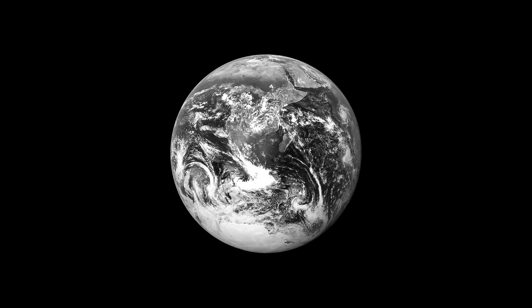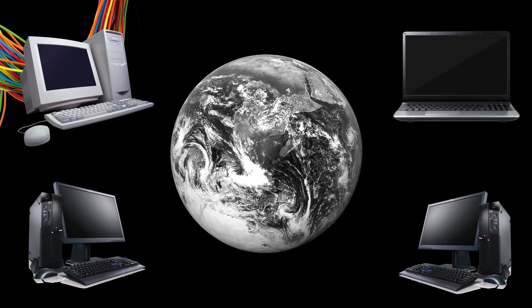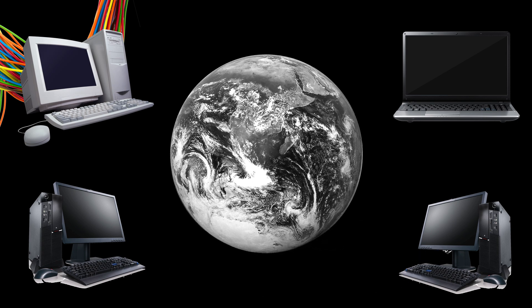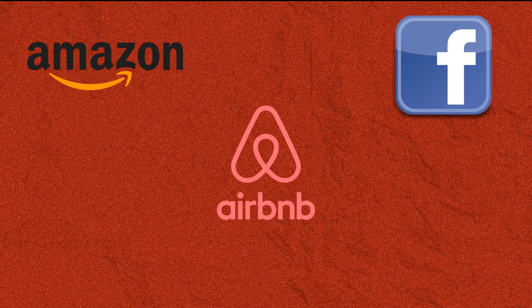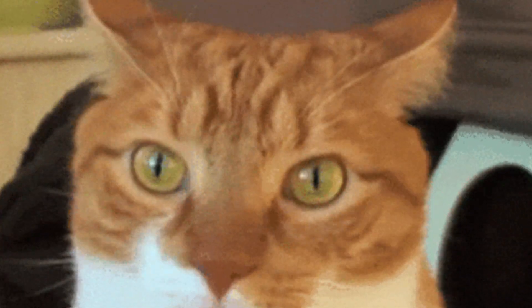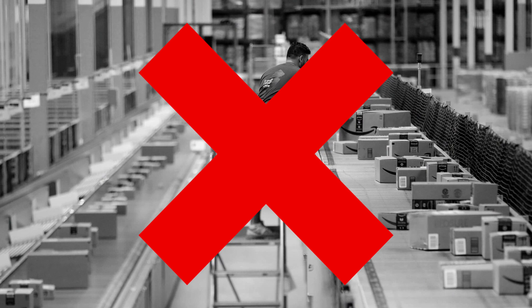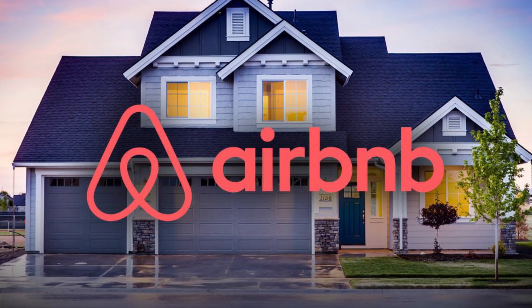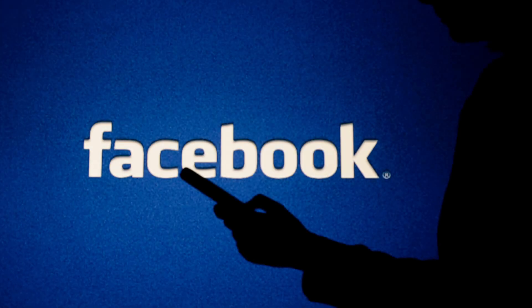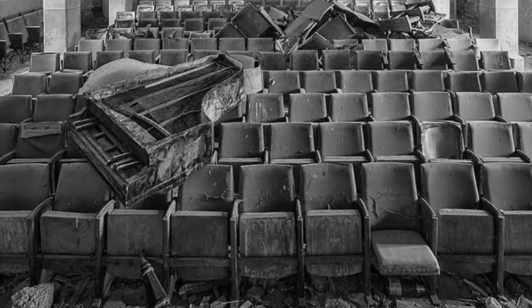Here's something fascinating about Web 2.0: it empowered users to actively participate in creating and sharing content. It's like the internet turned into a massive playground where everyone could join in. Some cool examples include Amazon, Facebook, Airbnb, Uber, and Netflix. What's intriguing is that these giants didn't actually own the stuff they dealt with. Amazon, the world's highest volume merchant, didn't have a massive inventory. Airbnb, the king of accommodation providers, didn't own properties. Even Facebook, the biggest media company, didn't create most of its content. And Netflix, the giant movie house, didn't own movie theaters.